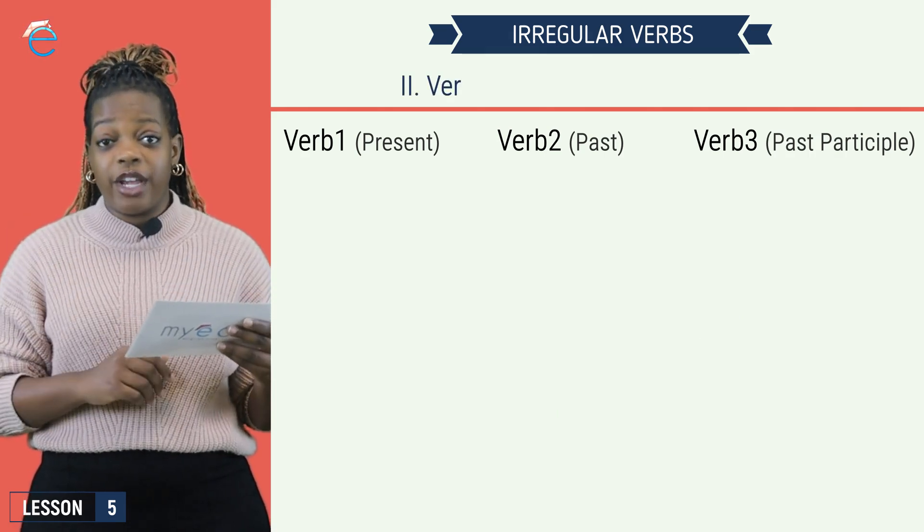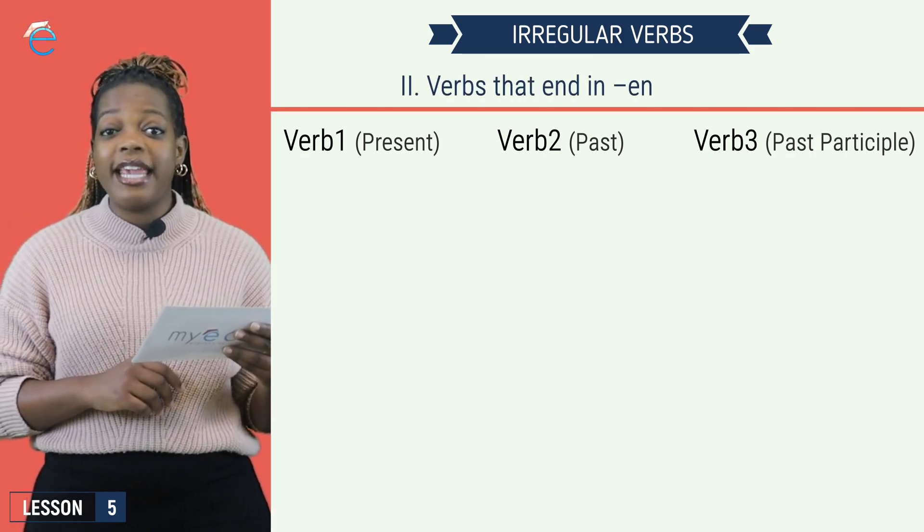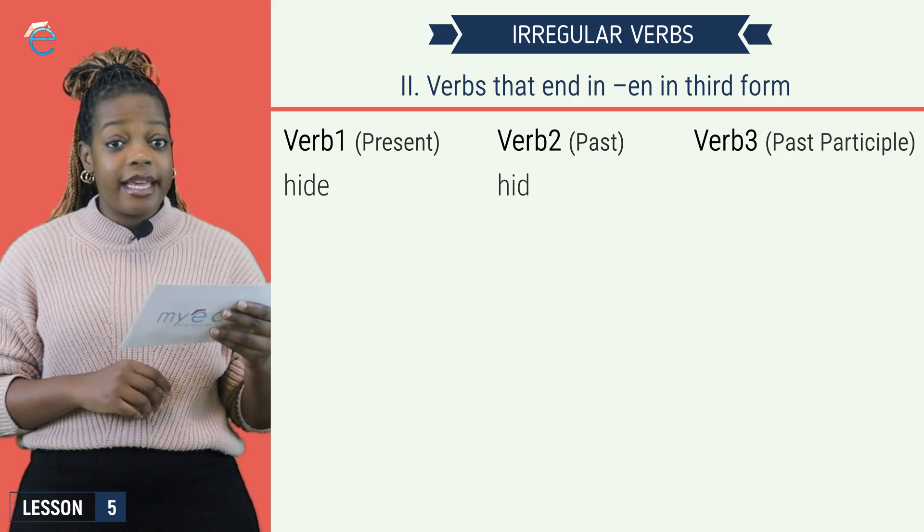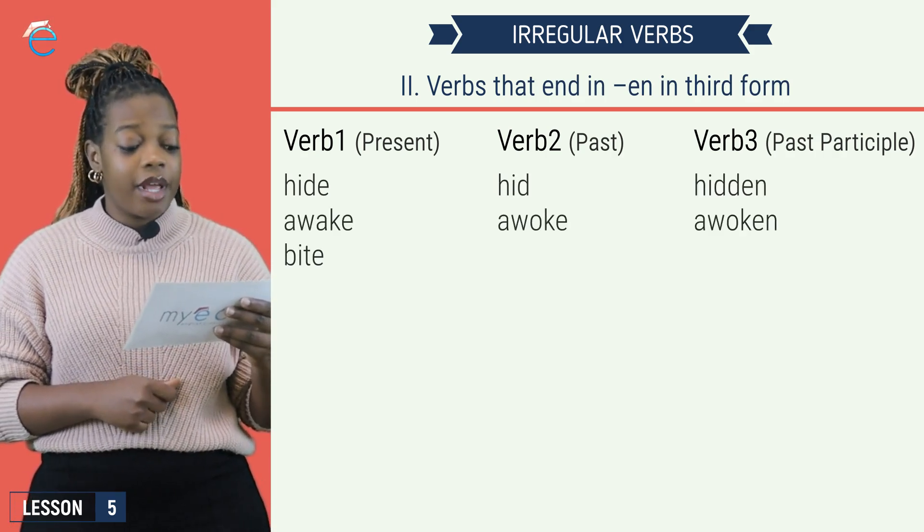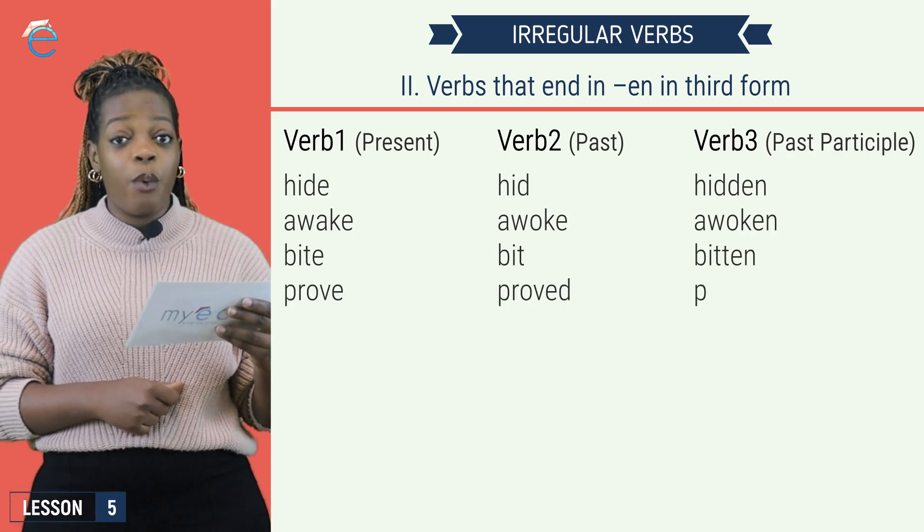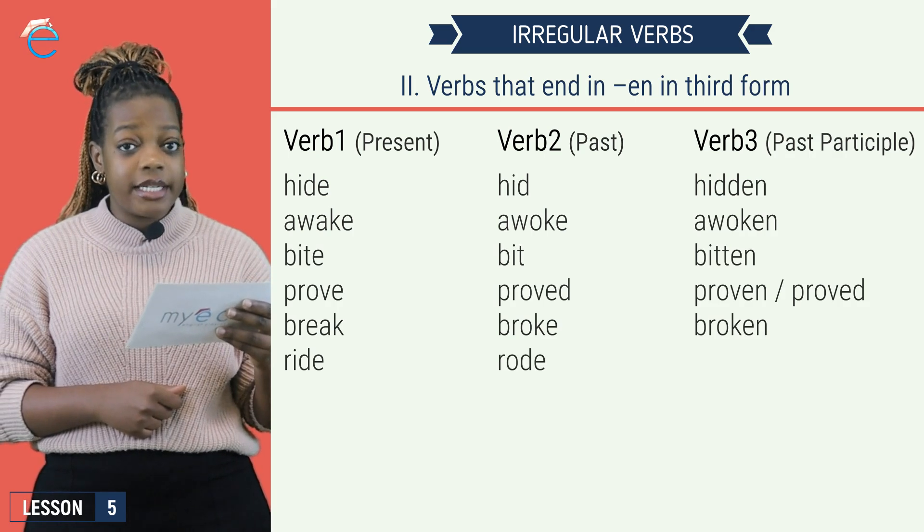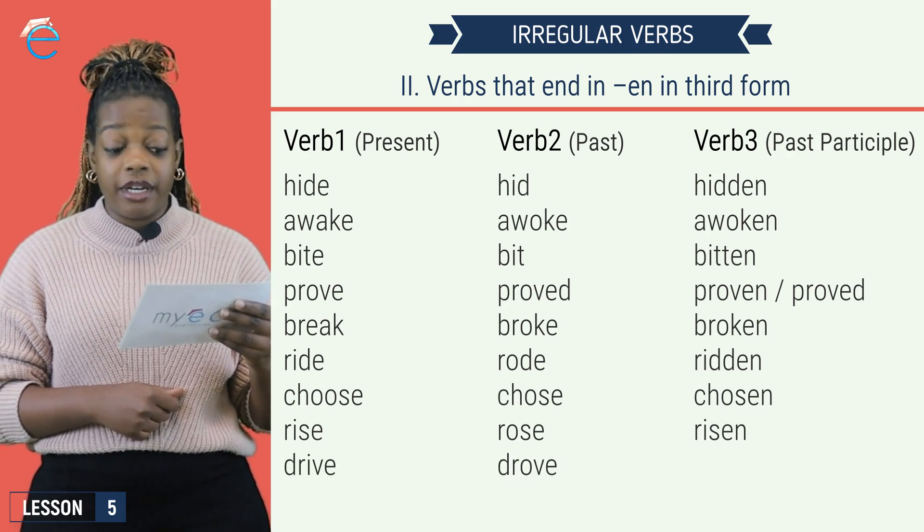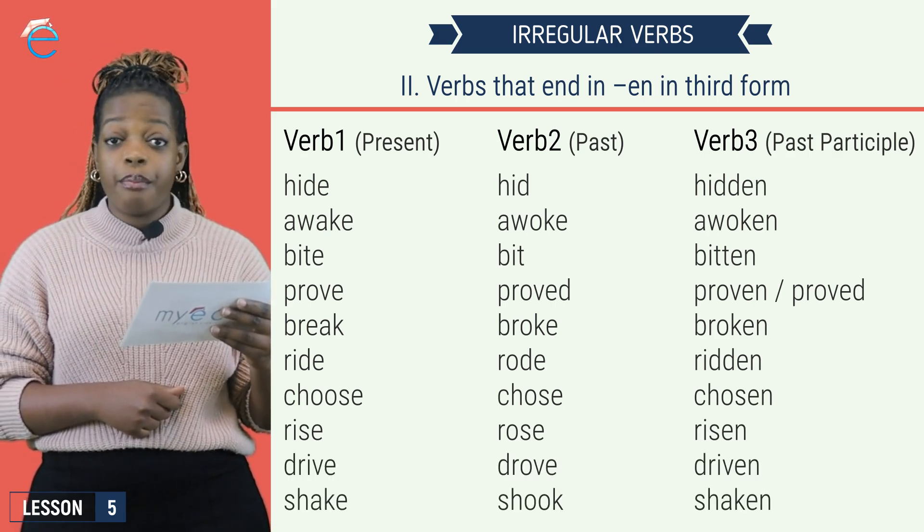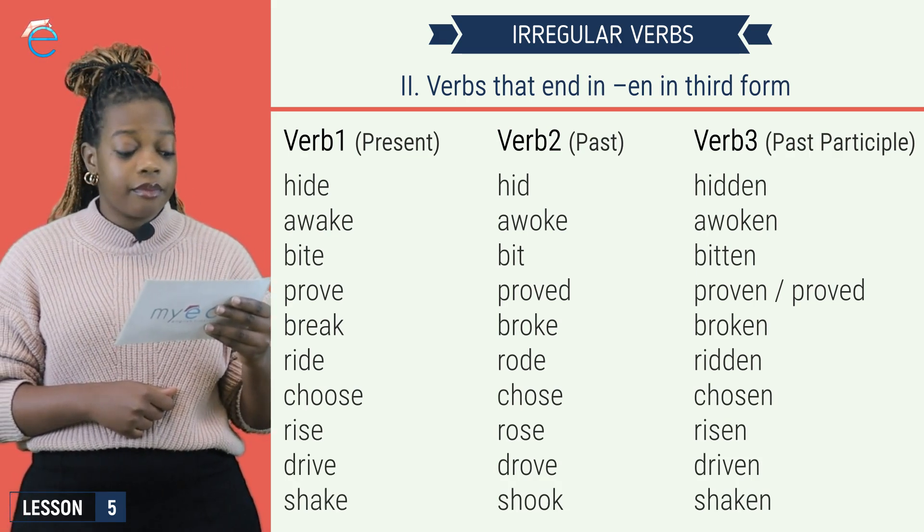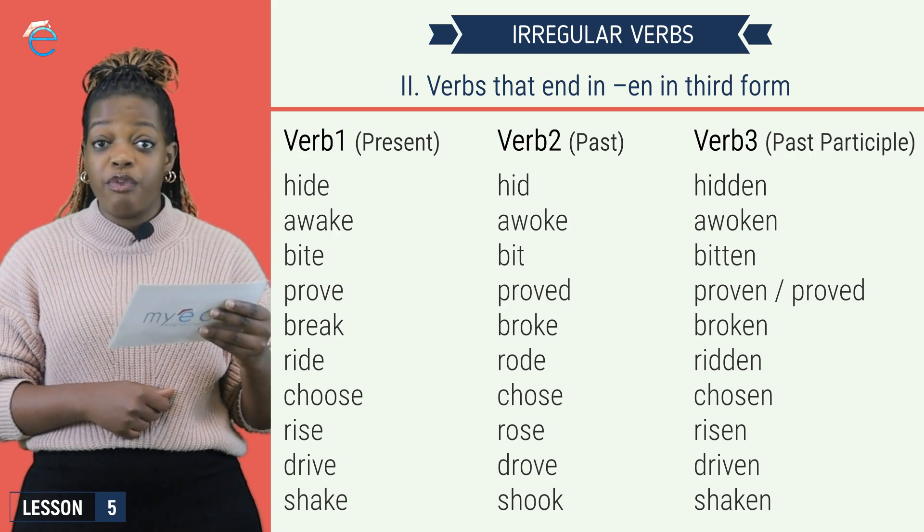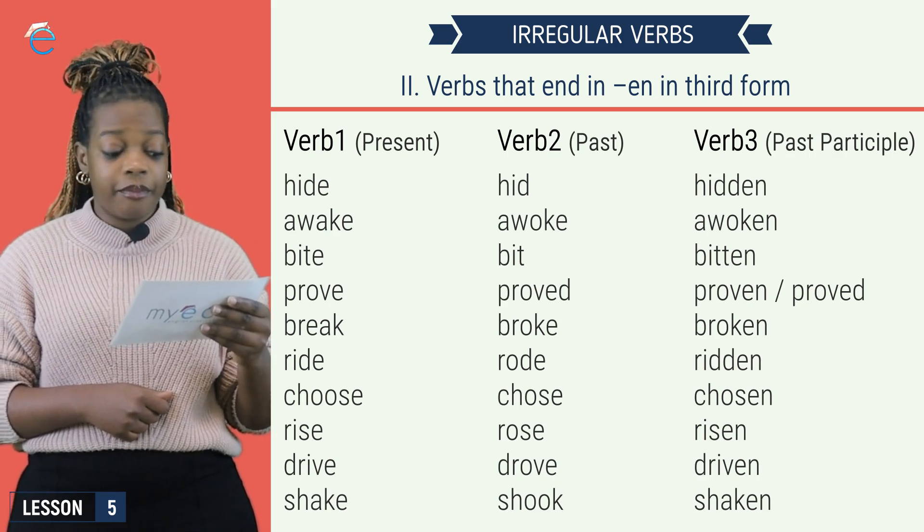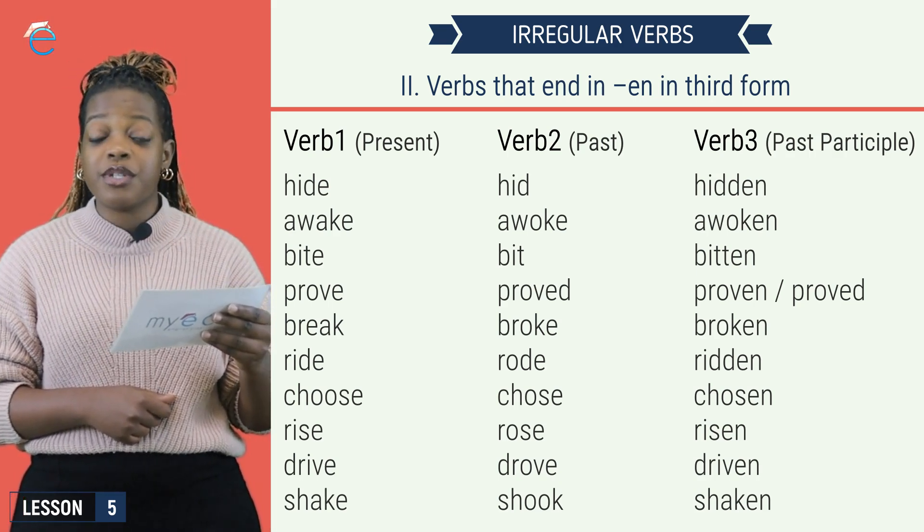Group two of irregular verbs are verbs that have an en ending in their verb three form. Hide, hid, hidden. Awake, awoke, awoken. Bite, bit, bitten. Prove, proved, proven. Break, broke, broken. Ride, rode, ridden. Choose, chose, chosen. Rise, rose, risen.